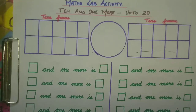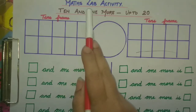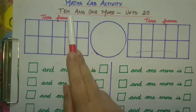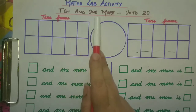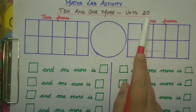Hello children, today we are going to do our second math slab activity. We are going to play one more game. So are you ready? The name of today's math slab activity is '10 and one more up to 20.'